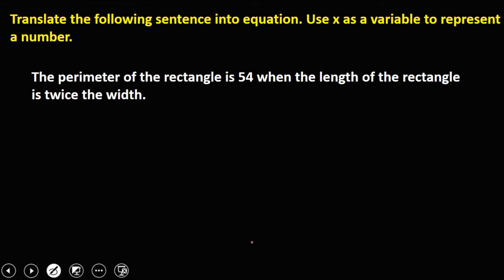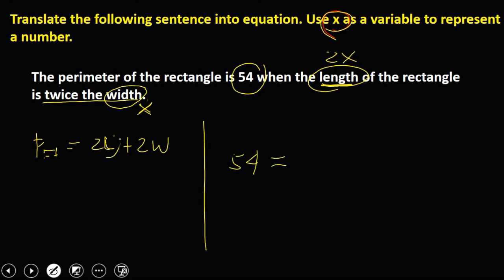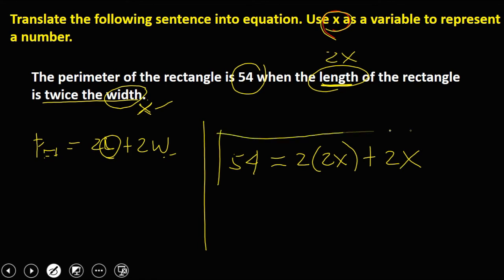Translate the following sentence into an equation, using x as a variable: 'The perimeter of a rectangle is 54, when the length of the rectangle is twice the width.' The formula for the perimeter of a rectangle is 2(length) + 2(width). Since the length is twice the width, if width is x, then length is 2x. So the equation is: 54 = 2(2x) + 2x.